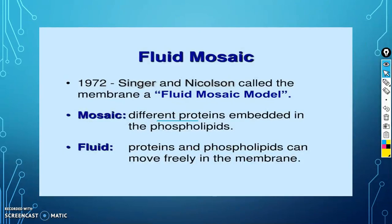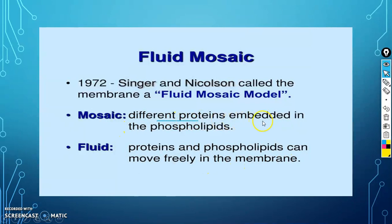Why is it called fluid mosaic? 'Mosaic' refers to different proteins embedded in the phospholipids. 'Fluid' refers to the fact that proteins and phospholipids can move freely within the membrane. So fluid means proteins and lipids can move freely, and mosaic means different proteins are embedded in the phospholipids.